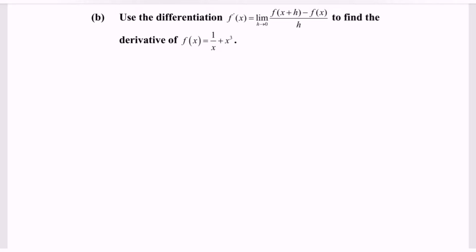Use the differentiation formula: f prime of x is equal to the limit as h approaches zero of f(x plus h) minus f(x), all over h, to find the derivative of the function f(x), where f(x) is equal to 1 over x plus x to the power of 3.